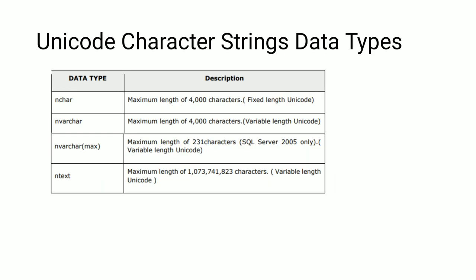Unicode character string data types include NCHAR, NVARCHAR, NVARCHAR(MAX), and NTEXT. NCHAR has a maximum length of 4000 characters and is of fixed length. NVARCHAR has a maximum length of 4000 characters and is variable length. NVARCHAR(MAX) has a maximum length of 2^31 characters, used in SQL Server 2005 only, and is variable length. NTEXT has a maximum length of 1,073,741,823 characters and is variable length.